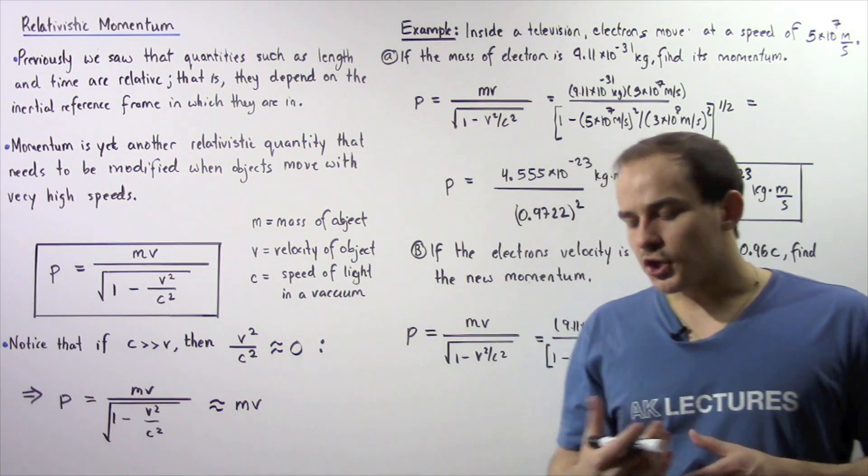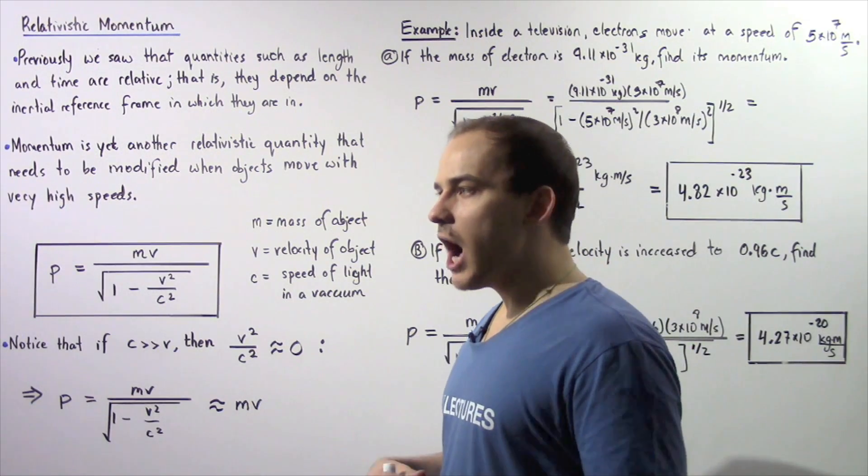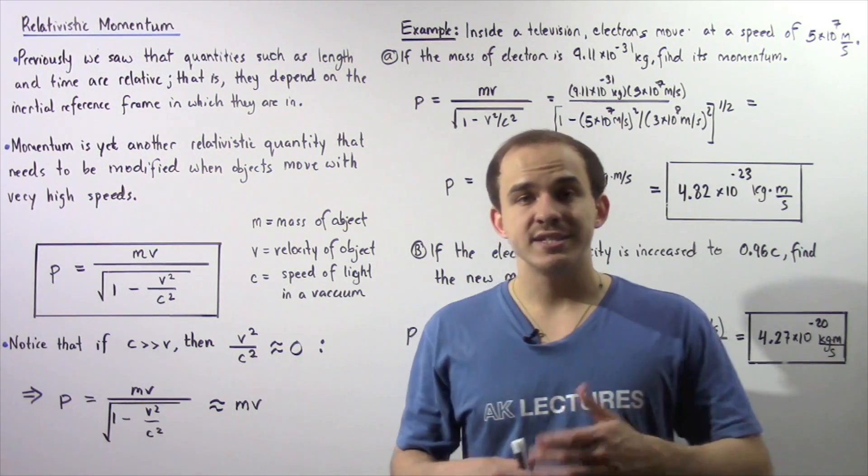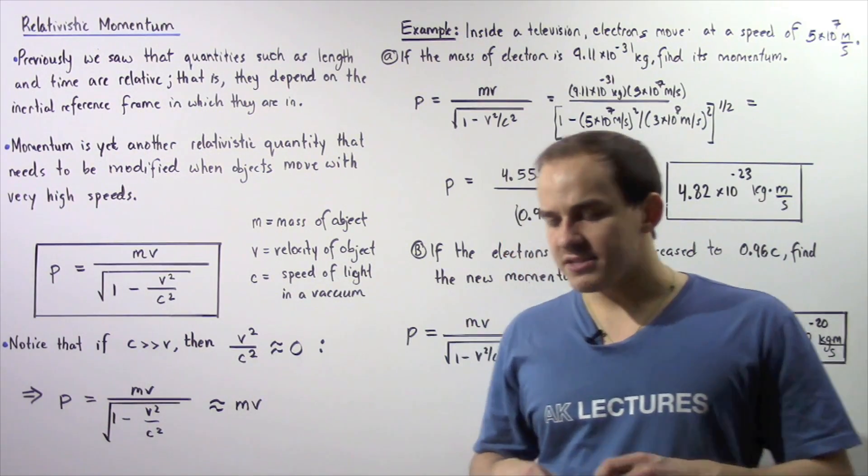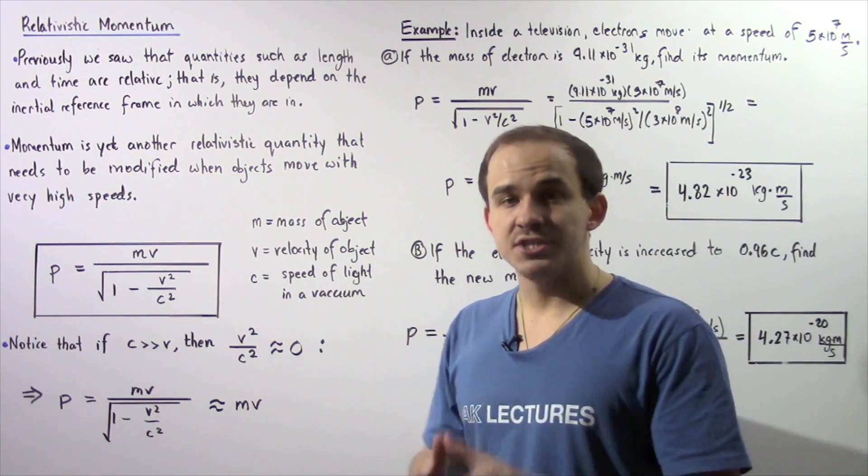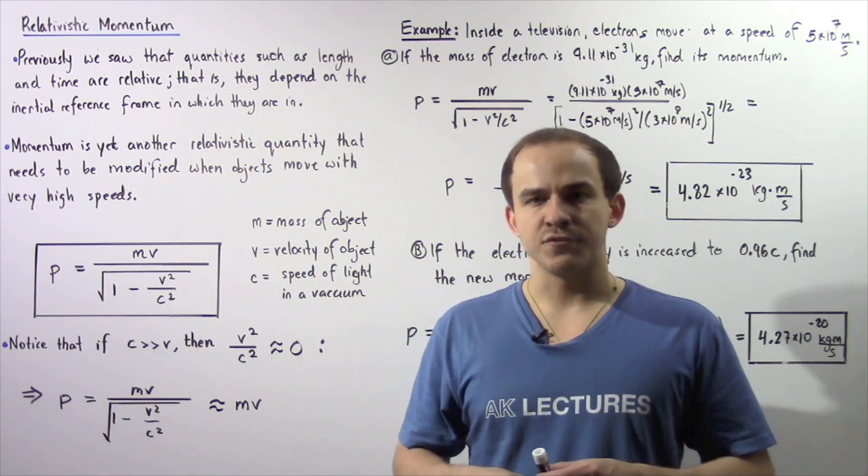Previously we saw that certain mechanical quantities that describe an event or an object are relative. Two examples are time and length. What that basically means is time and length are quantities that are different in different inertial reference frames.